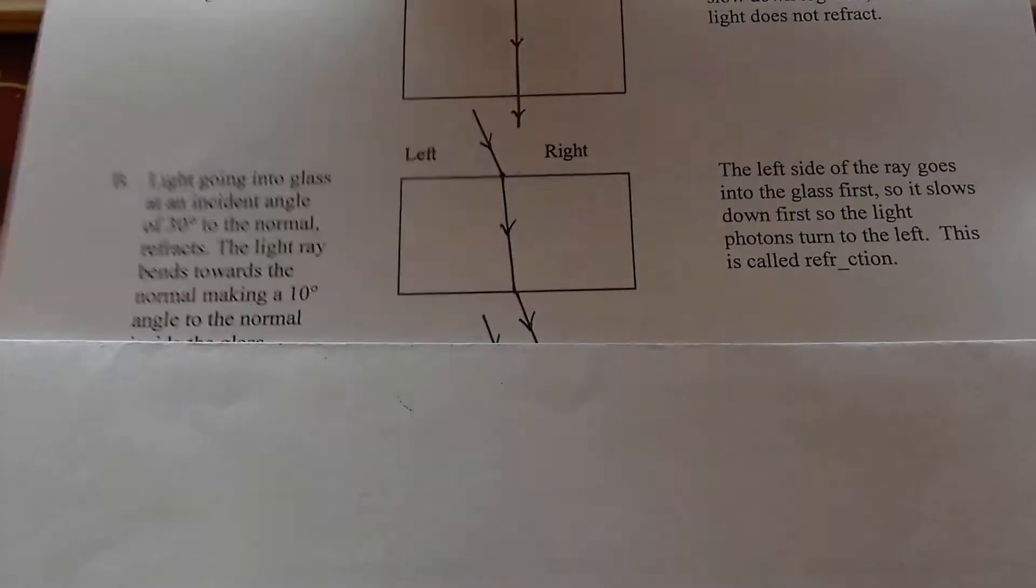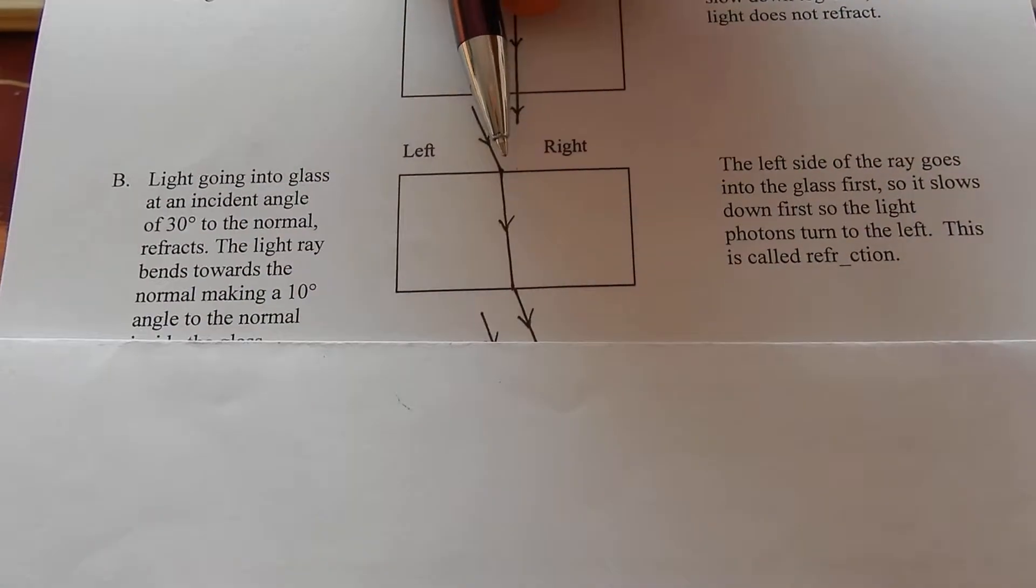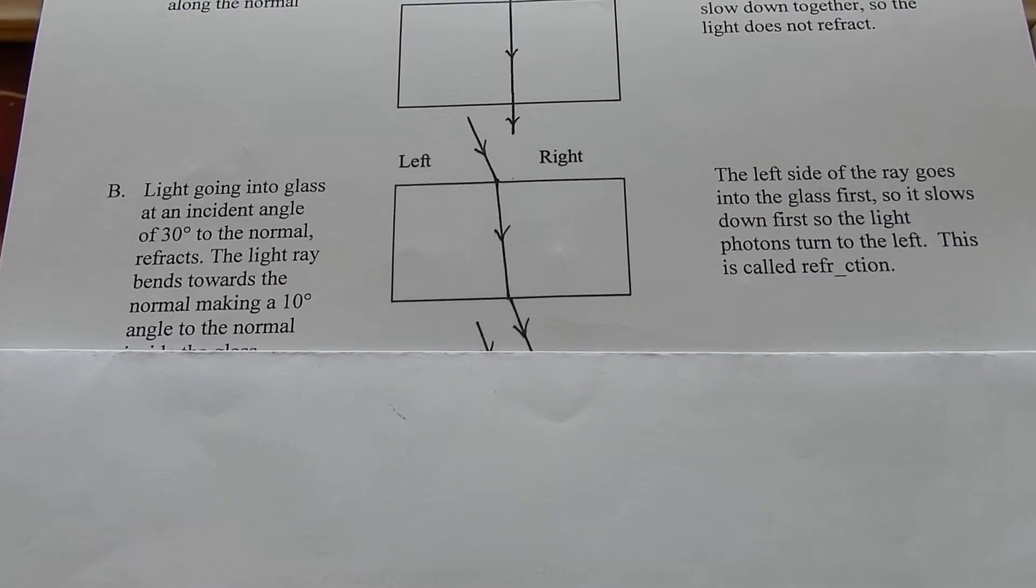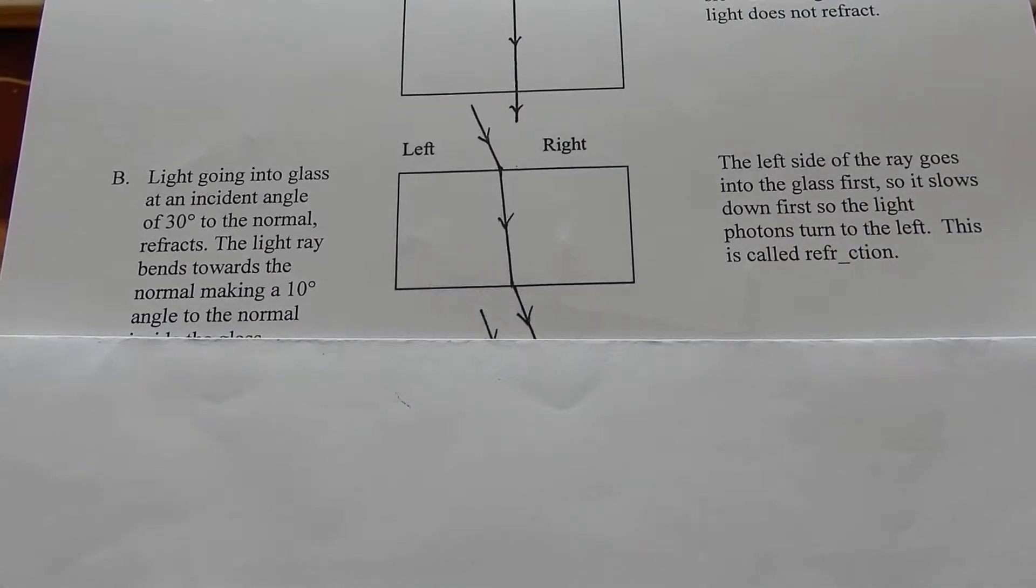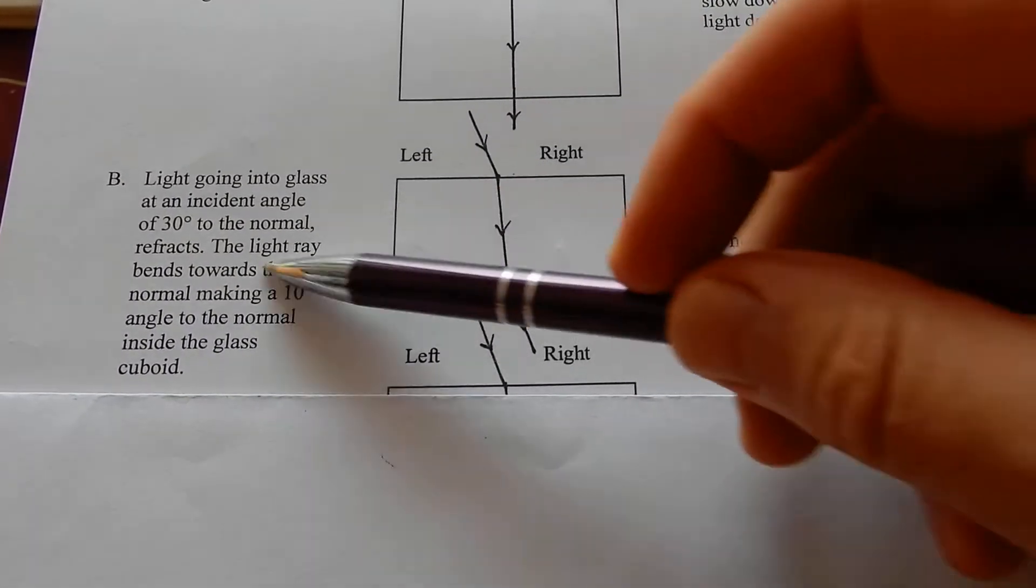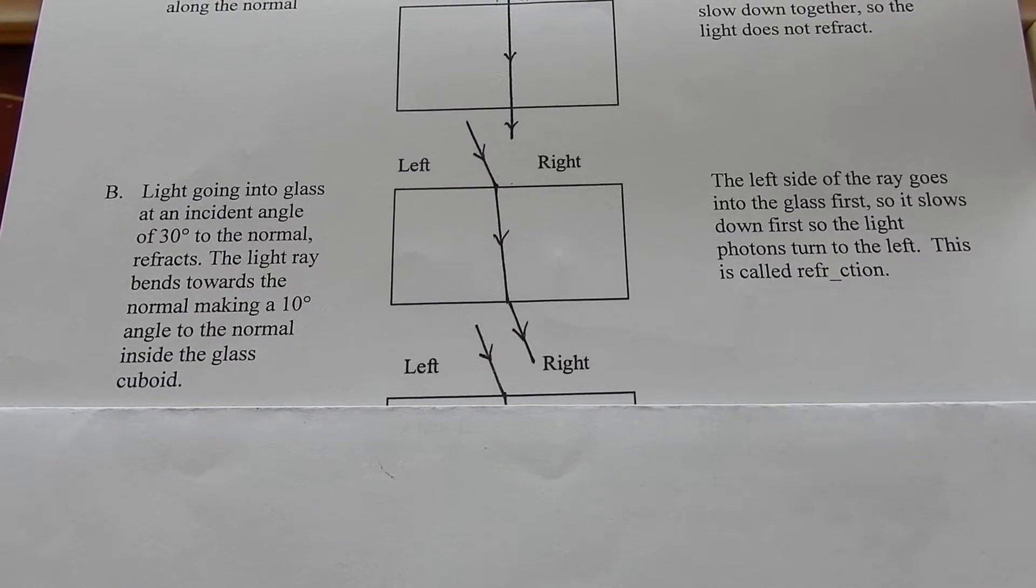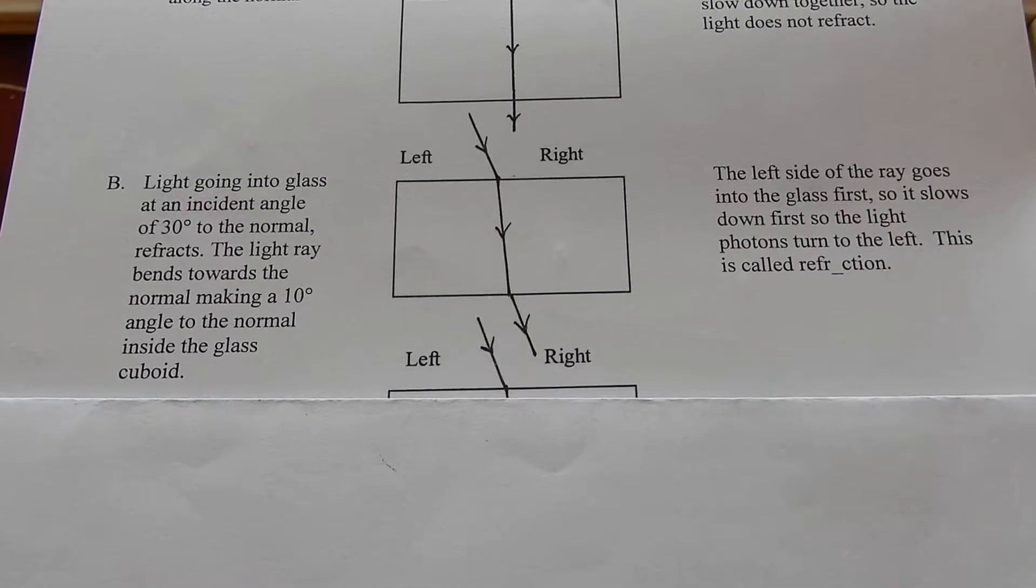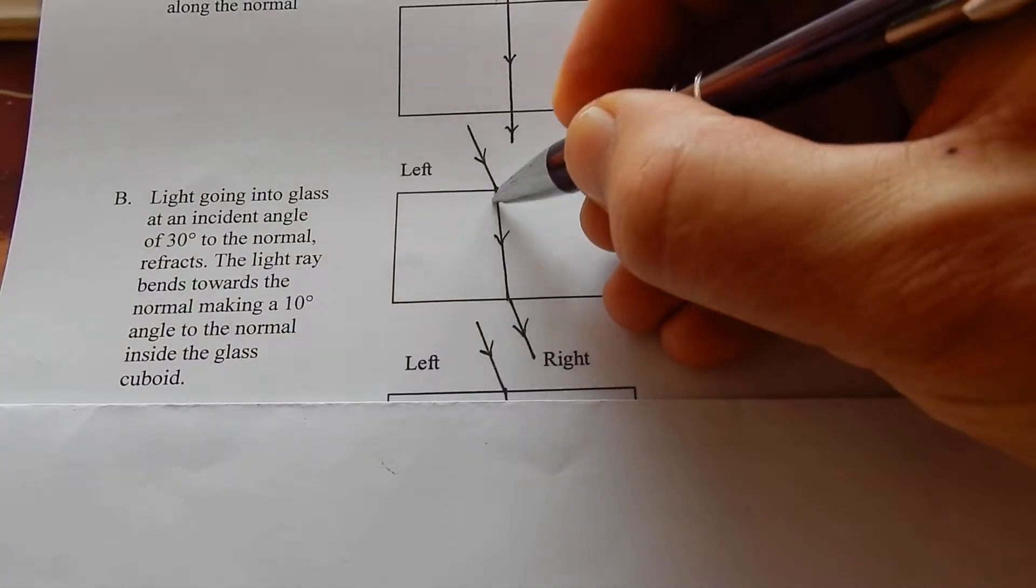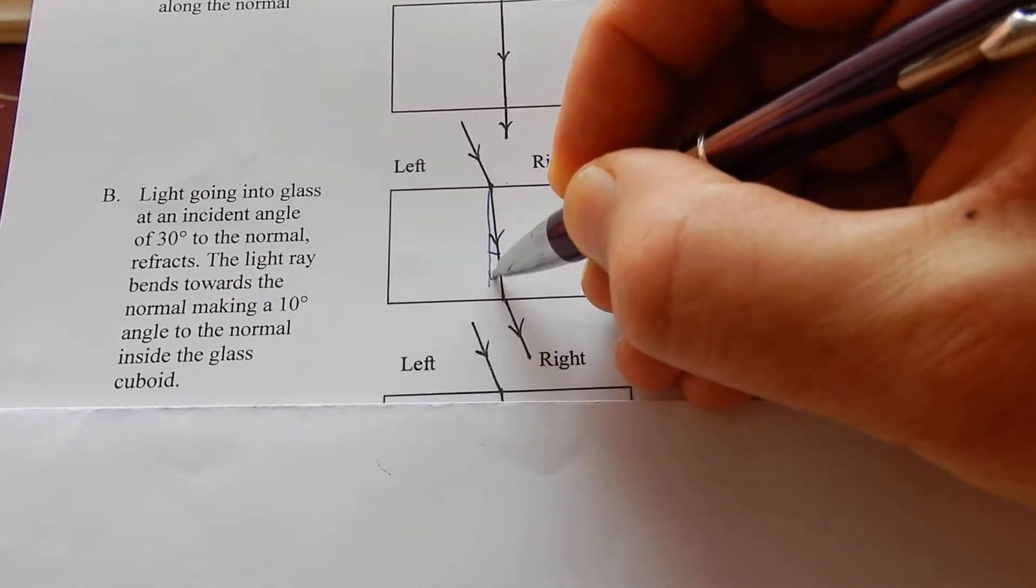As the light is going in this direction, this is the right of the light. Light going into glass at an incident ray of 30 degrees to the normal refracts. The light ray bends towards the normal making a 10 degree angle to the normal inside the glass.